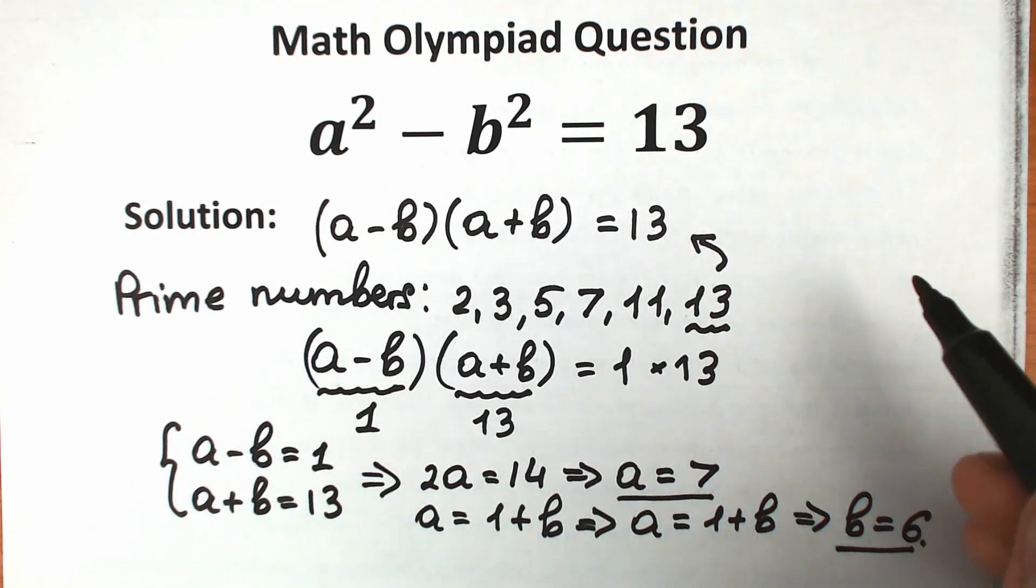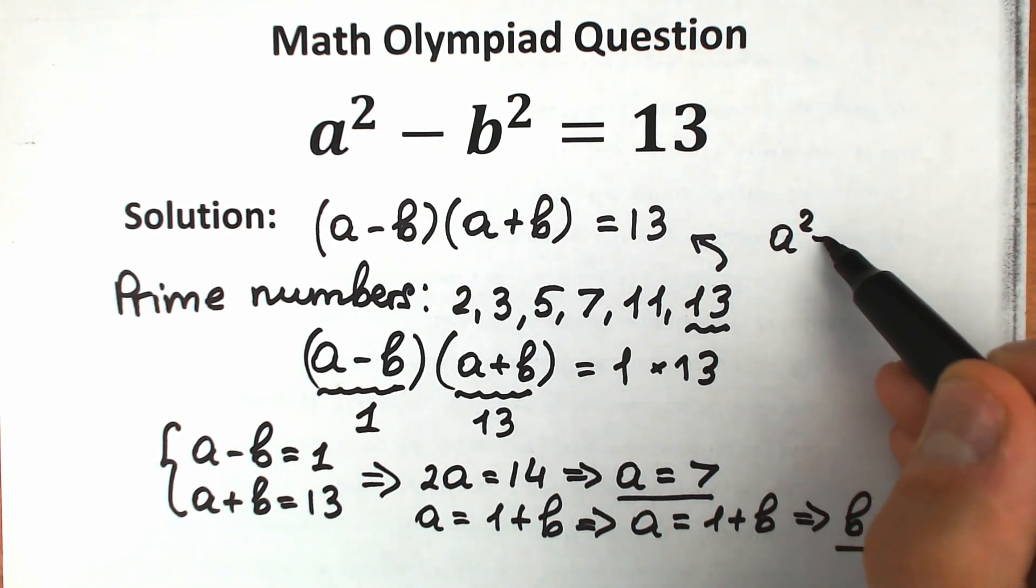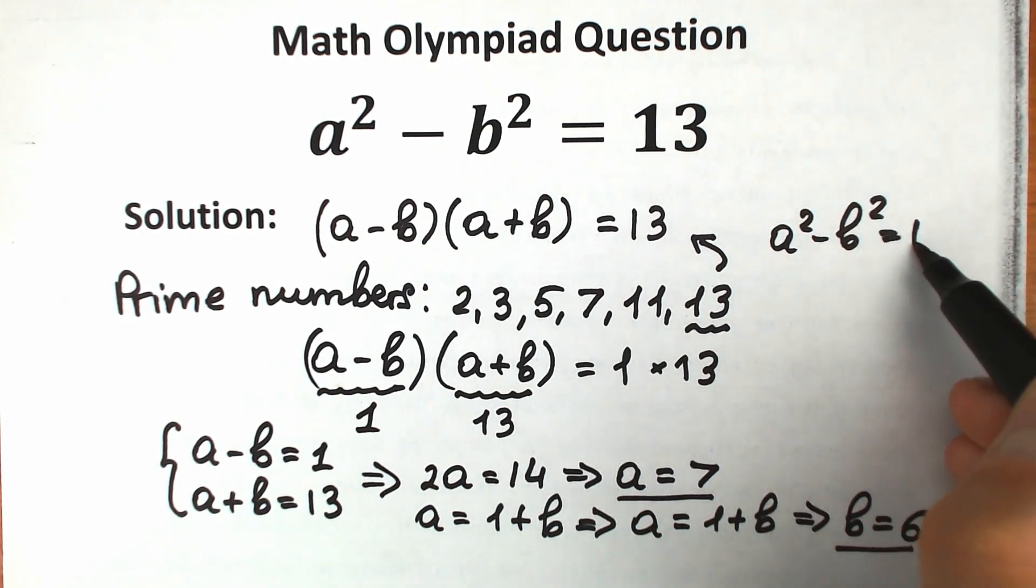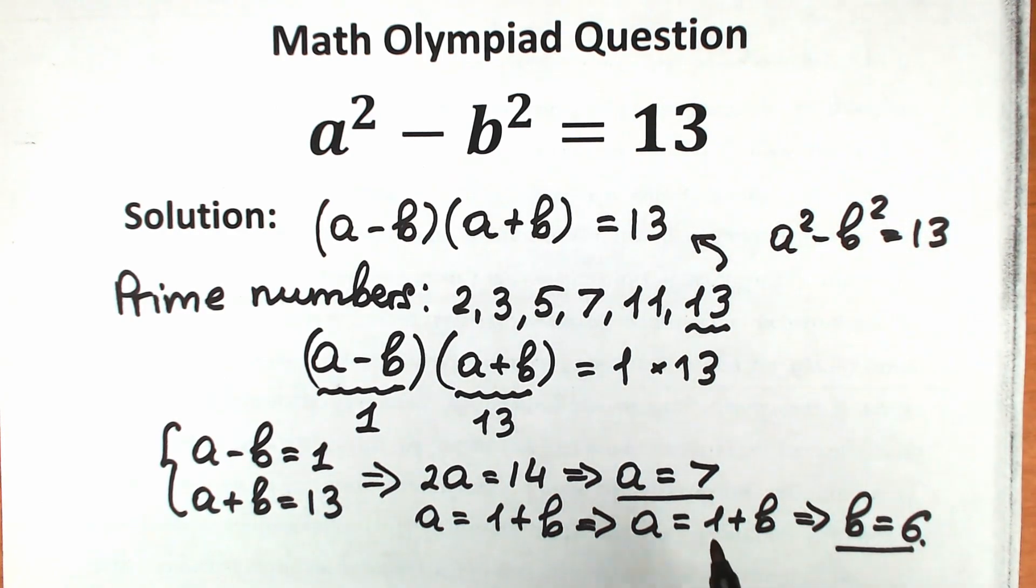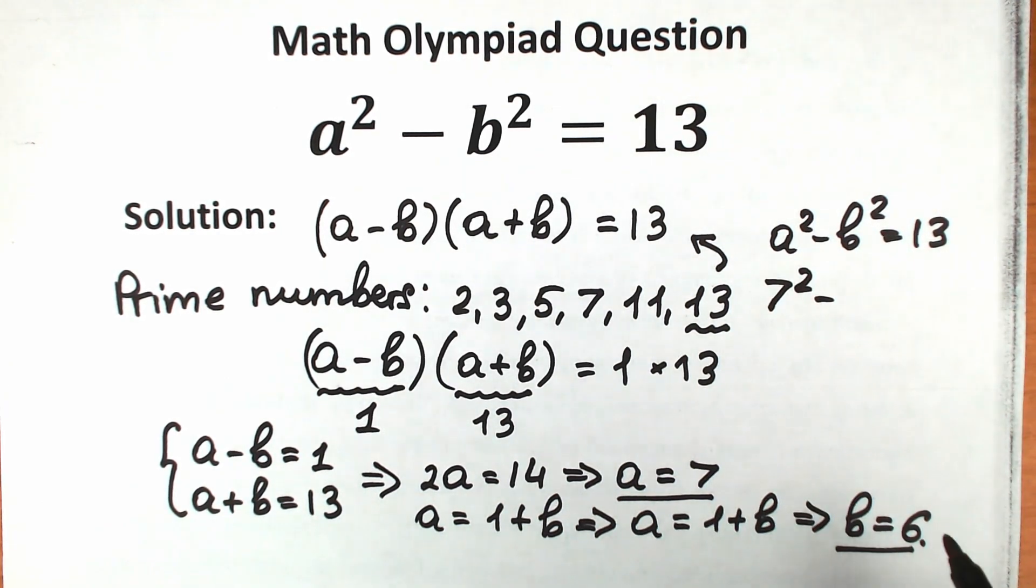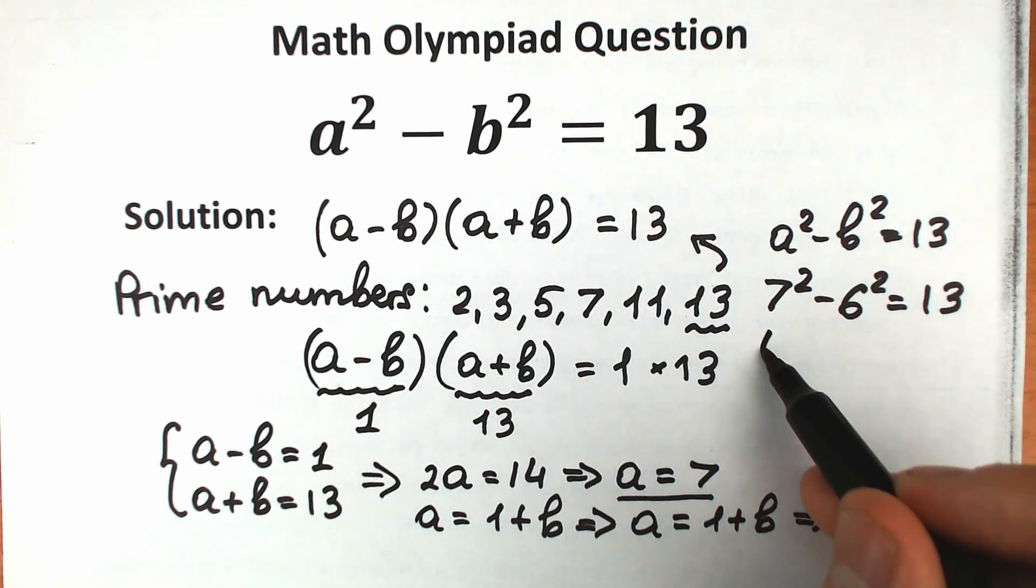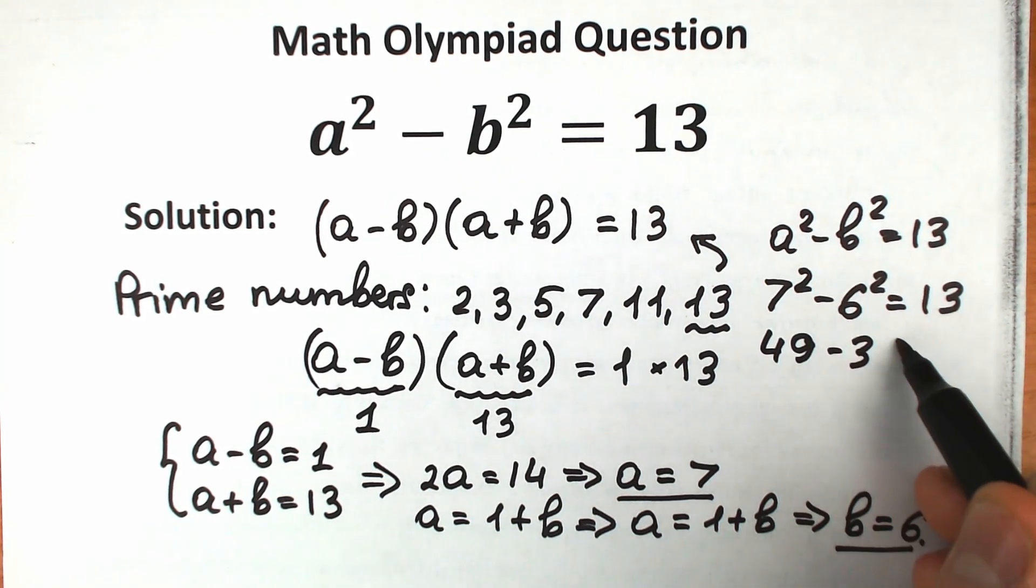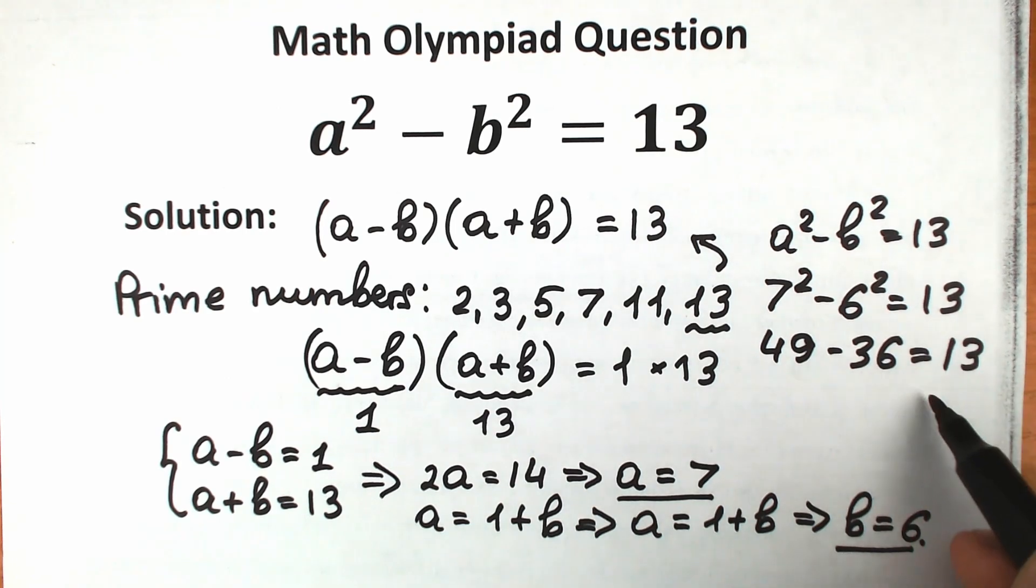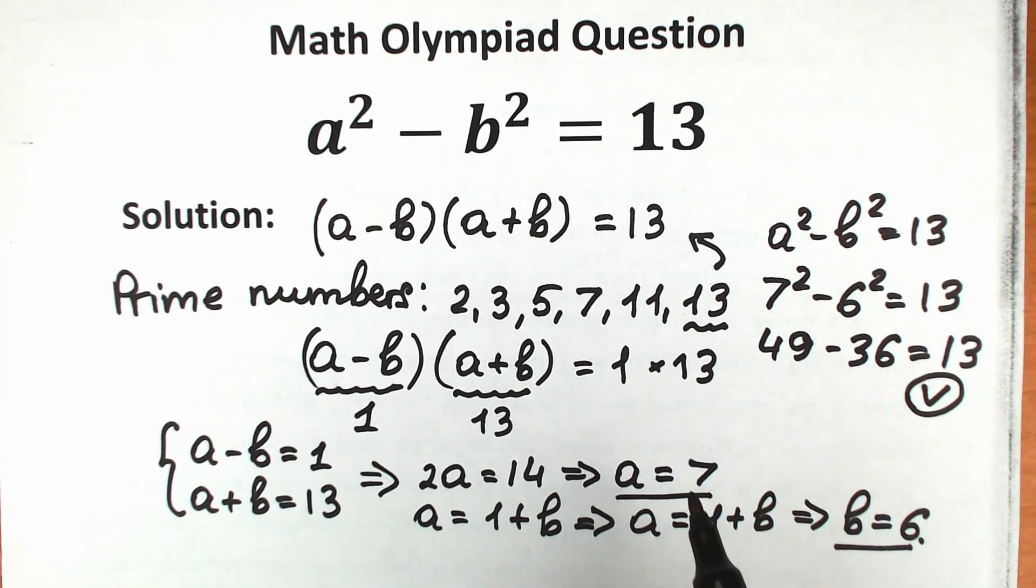Let's check our result. We have a squared minus b squared equals 13. So right here, we have a equals 7, so we have 7 squared minus b squared, 6 squared, equals 13. So we have 49 minus 36, which gives us 13. And this is absolutely correct. So we can easily find our answer: a equals 7, b equals 6.